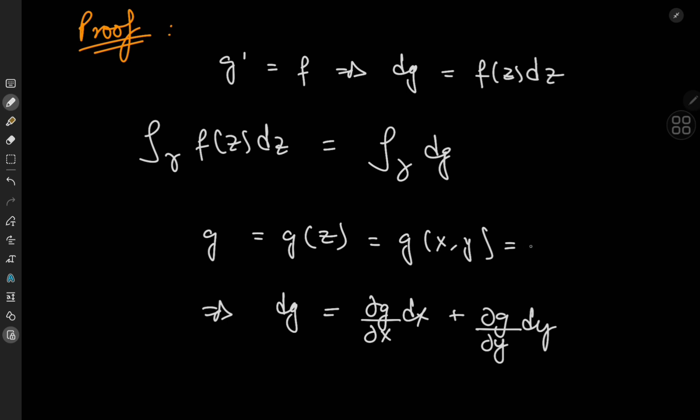...recall that we can write any complex-valued function as its real part u(x, y) plus i times its imaginary part v(x, y). Since u and v are real-valued functions of x and y, and because g is analytic, u and v are both differentiable in the multivariable calculus sense.